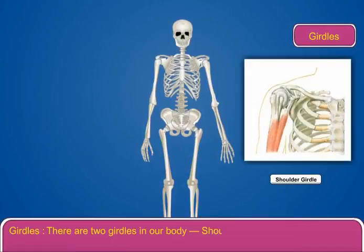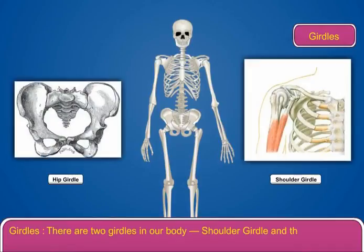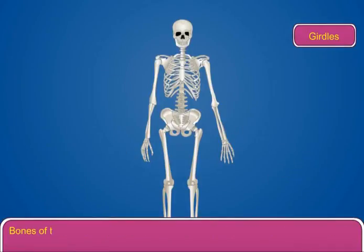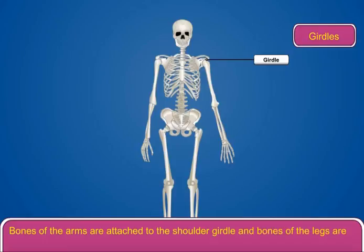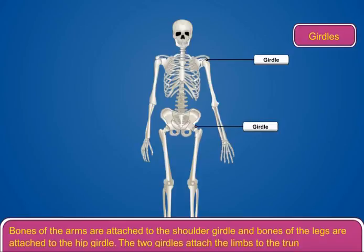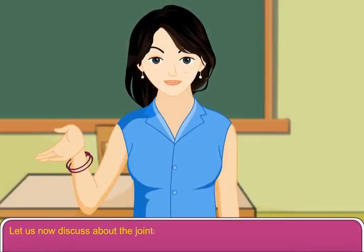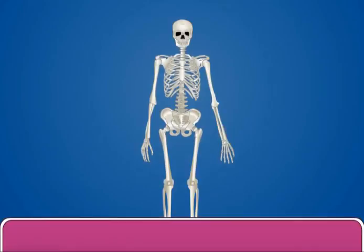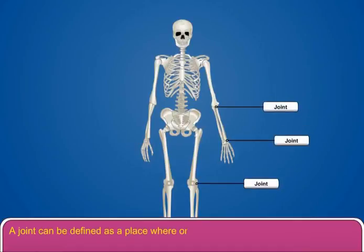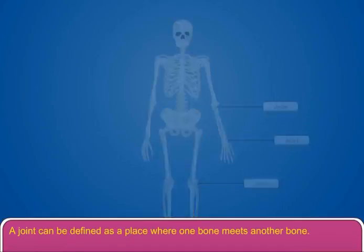There are two girdles in our body: the shoulder girdle and the hip girdle. Bones of the arms are attached to the shoulder girdle and bones of the legs are attached to the hip girdle. The two girdles attach the limbs to the trunk.